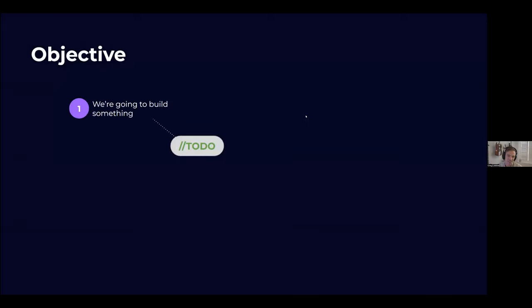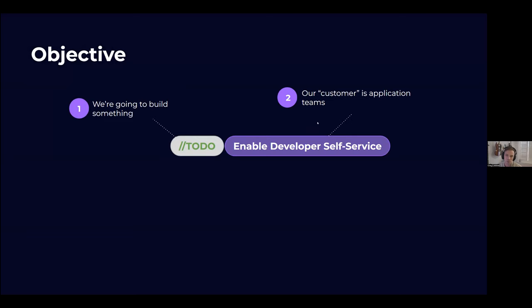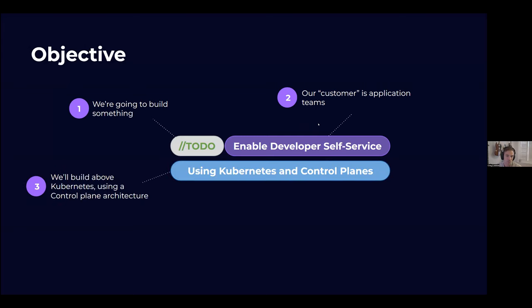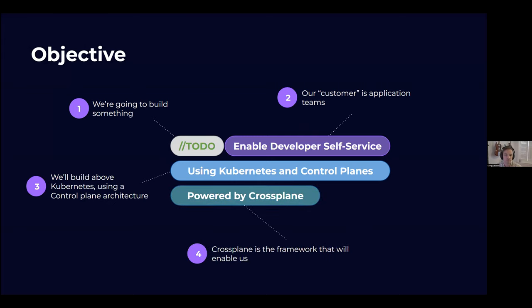The objective for the 50 or so minutes we have together is we are going to build a developer self-service platform. The customer for this product is application developer teams, and we're going to build it above Kubernetes using control planes powered by Crossplane — that's the framework that will give us the building blocks. There's also this trend in the industry about operating platforms as a product, which is very fitting as we build with control planes.